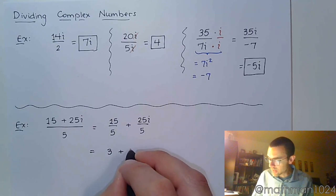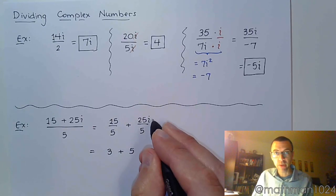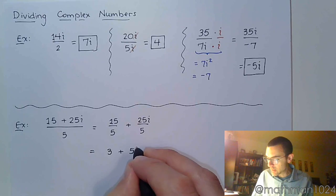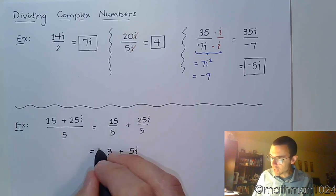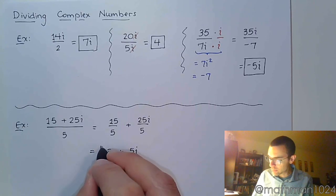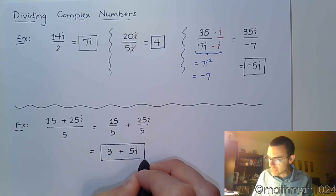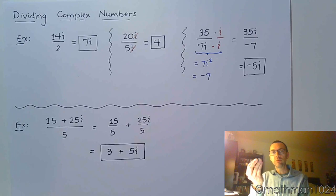You separate so that you can simplify. 15 over 5 is 3. And 25 over 5 is 5. Don't forget about the i here. So, it's 3 plus 5i. Nothing left in the denominators because it's simplified away. And notice how my answer here is written in standard form. Real followed by the imaginary part.